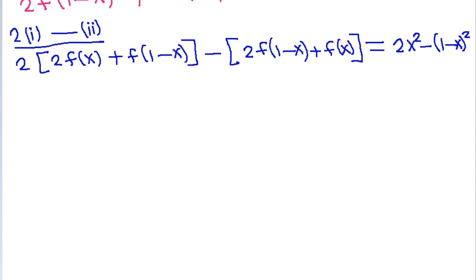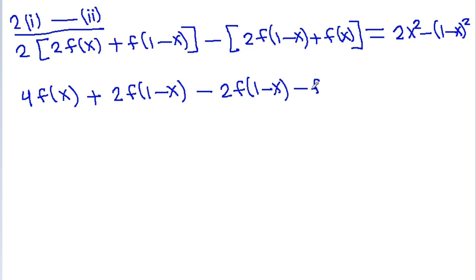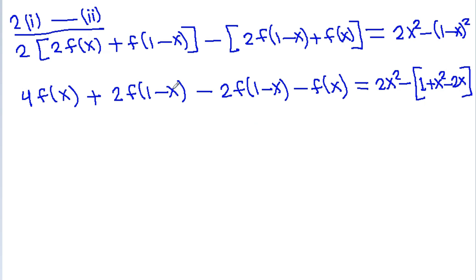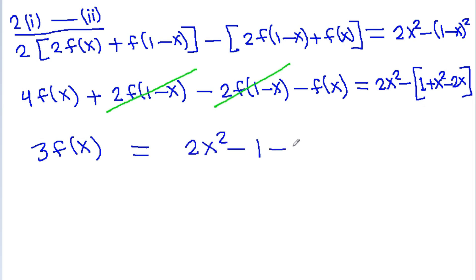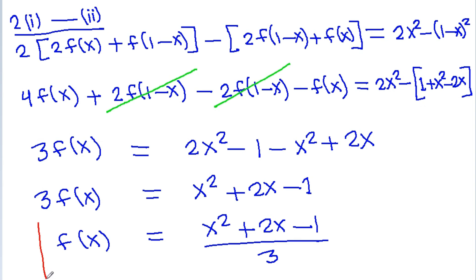This gives us 4f(x) plus 2f(1-x) minus 2f(1-x) minus f(x), which simplifies to 3f(x), equal to 2x squared minus (1 plus x squared minus 2x). So 3f(x) equals x squared plus 2x minus 1, and therefore f(x) is equal to (x squared plus 2x minus 1) divided by 3. That is the value of f(x).